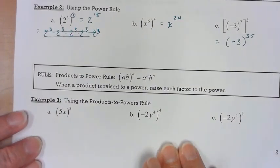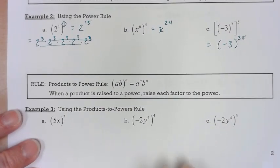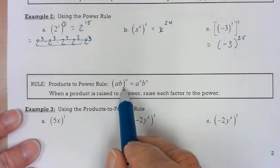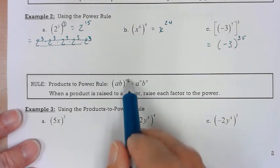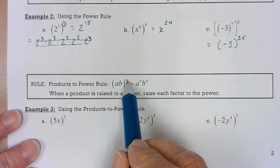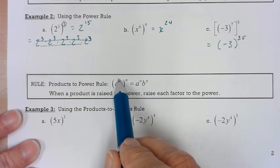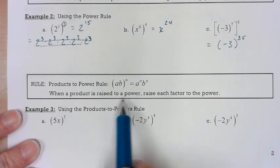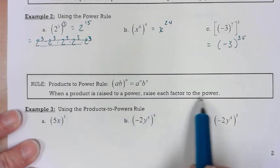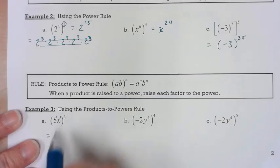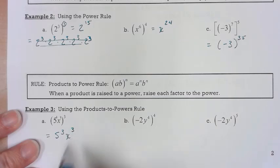Now the products to power rule. I've got a product enclosed in parentheses, and that in turn is raised to an exponent. So like before, this outer exponent gets multiplied to all the little exponents inside. When a product is raised to a power, raise each factor to the power. So in this one — remember there's a 1 there and a 1 there — I would have 5 to the third, x to the third.